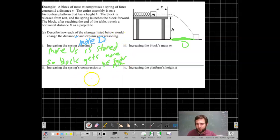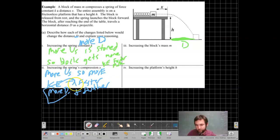If we increase the spring's compression x, same thing. That means there's more spring potential energy, so there'll be more kinetic energy by the time it gets to the end. More kinetic energy means faster and farther. So again, we have more displacement covered.